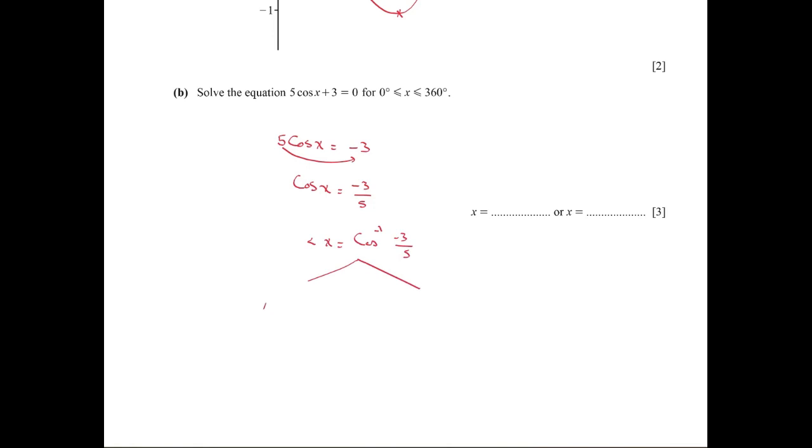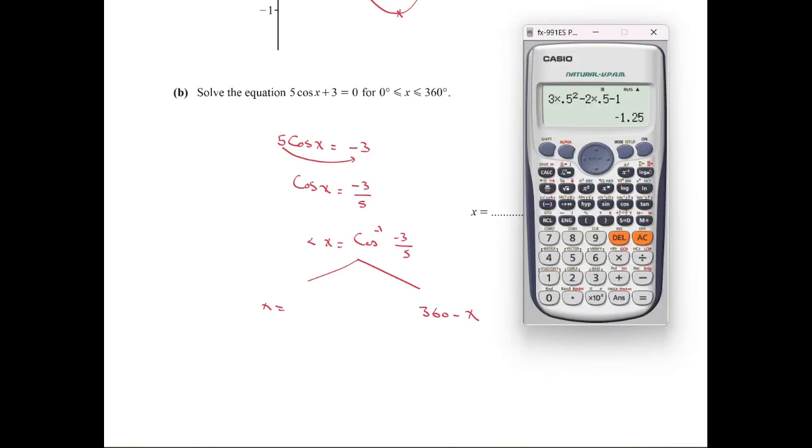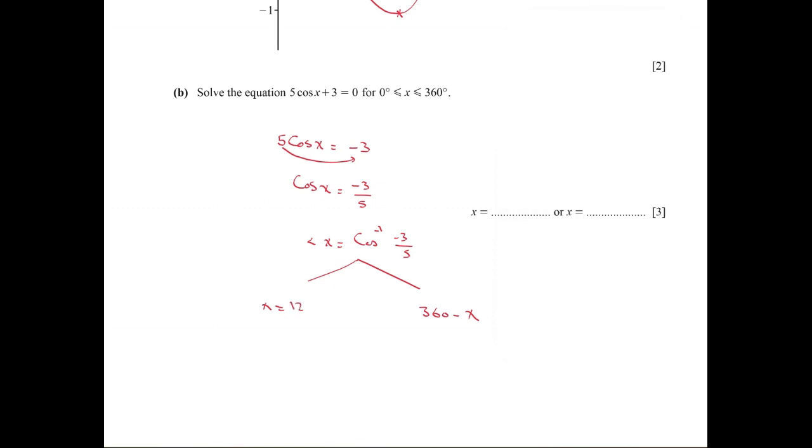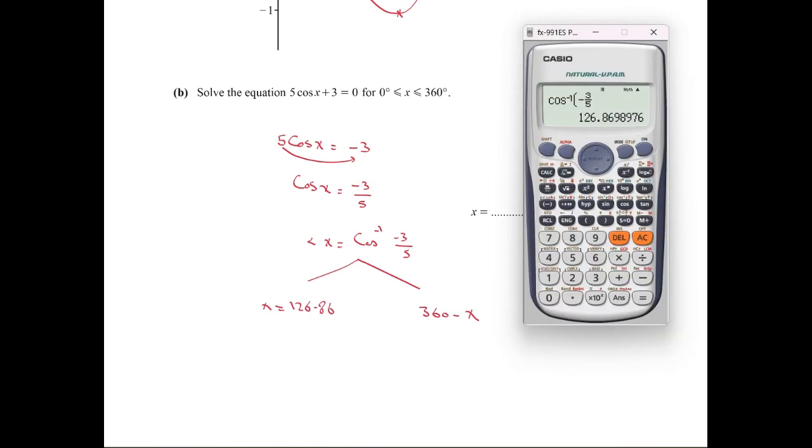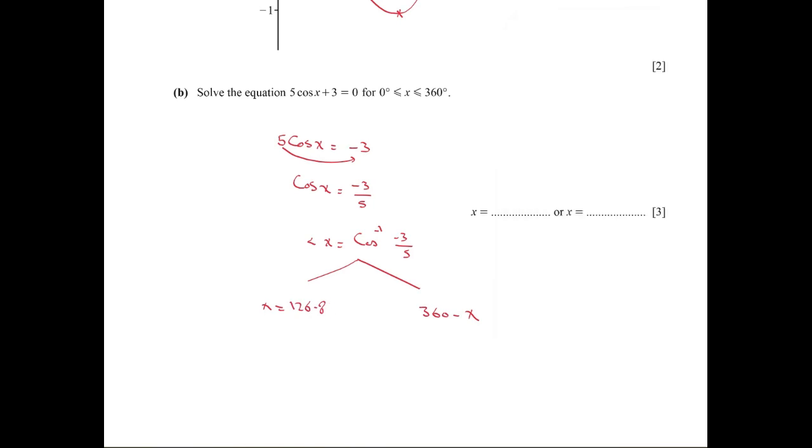The answer shown in your calculator, and 360 minus the answer shown in your calculator. Using shift cosine: -3/5 equals 126.87. This is your first answer.